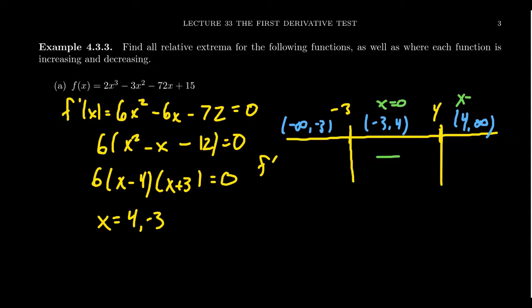By similar reasoning, as x approaches negative infinity, 6x² still approaches positive infinity since it has an even degree and positive leading coefficient. So we get plus, minus, plus on our sign chart. Filling out this sign chart is exactly what we do to determine the monotonicity of f. Whenever the derivative is positive the function is increasing, and whenever the first derivative is negative the function is decreasing.